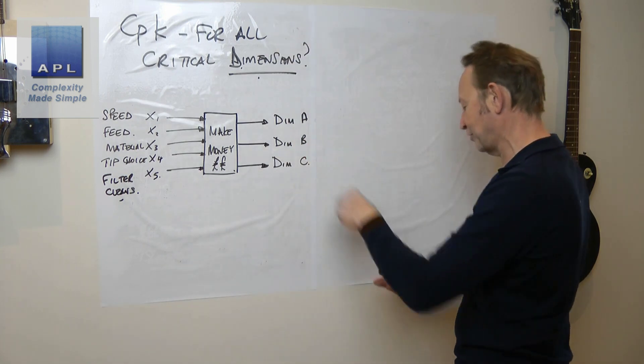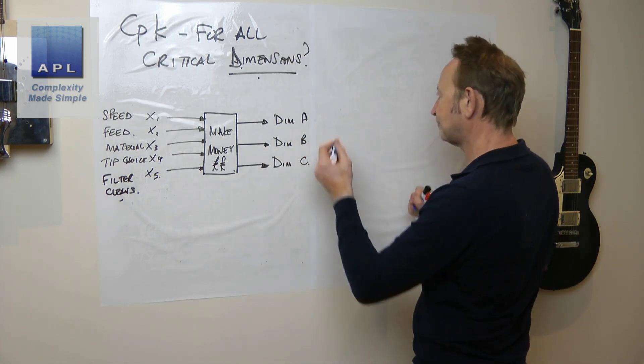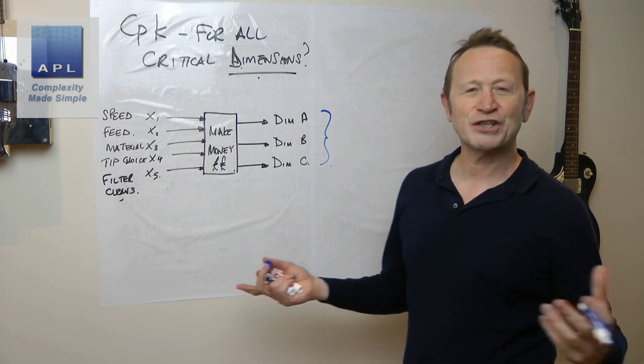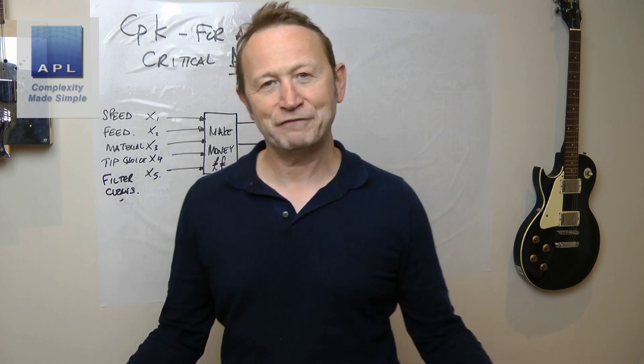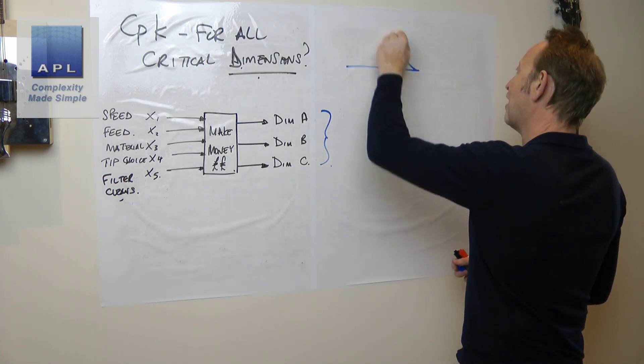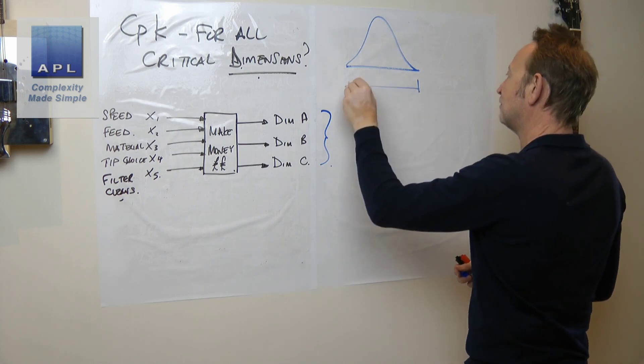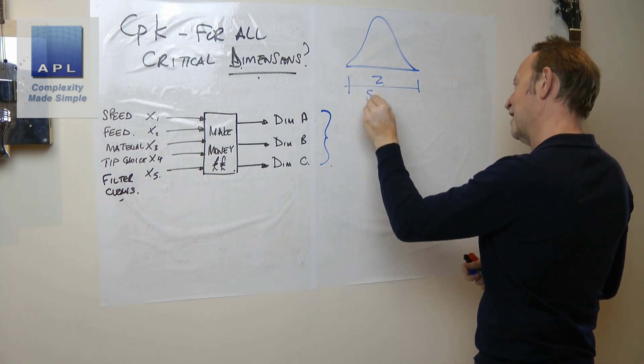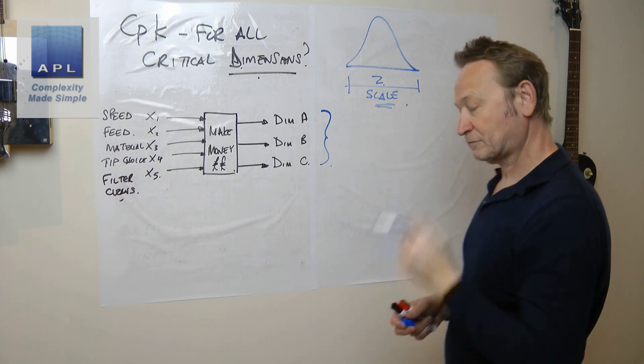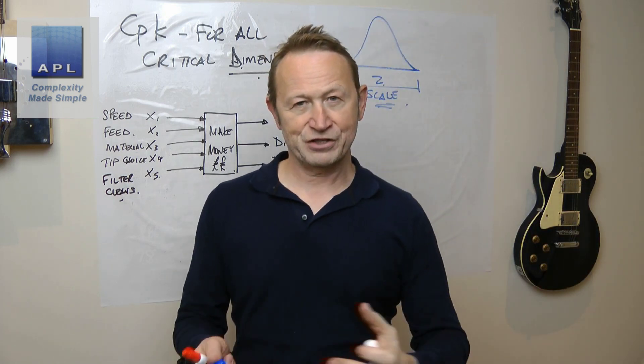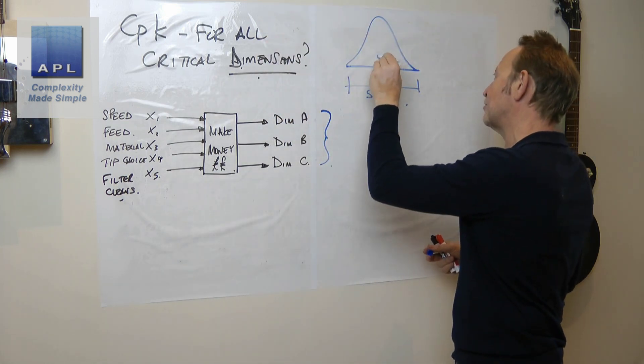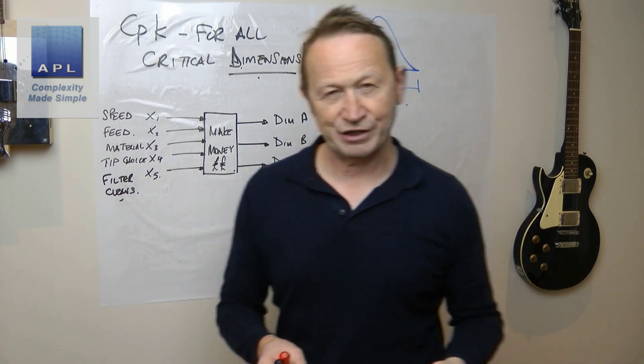Now let's say we found some clever way of putting all of this data together. One thing you could do is reference everything on a Z scale - how much deviation it is from the center of the Z scale, the center being zero.